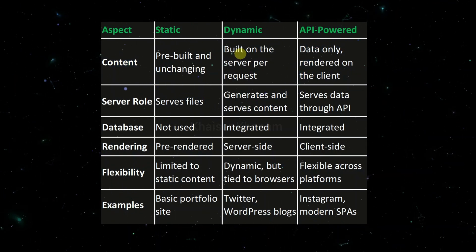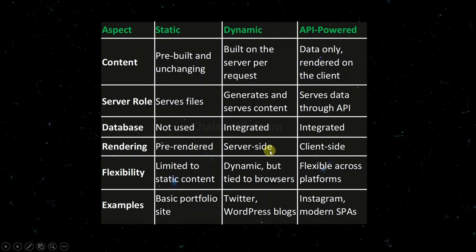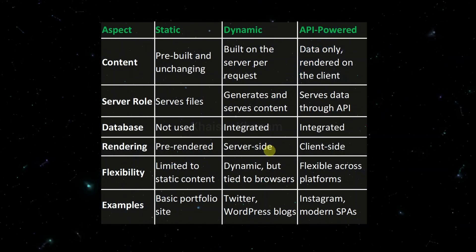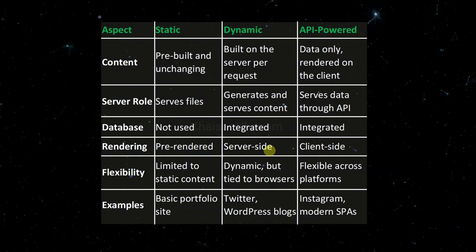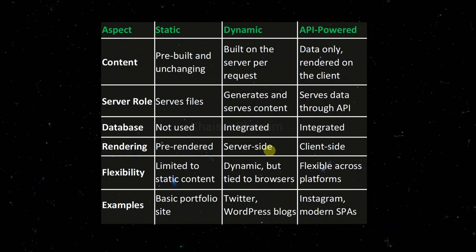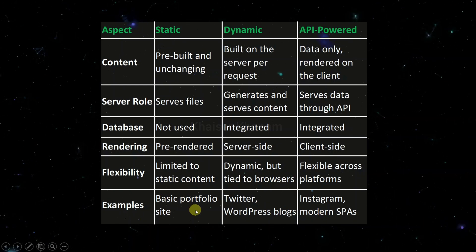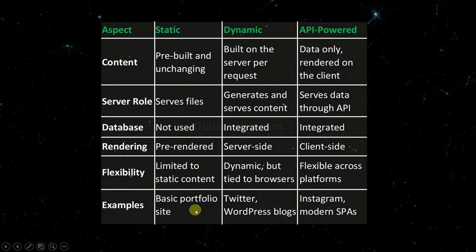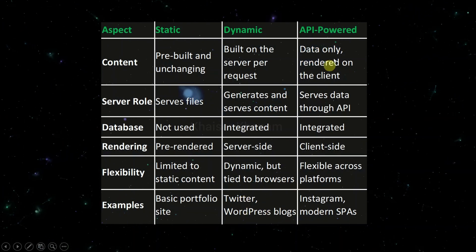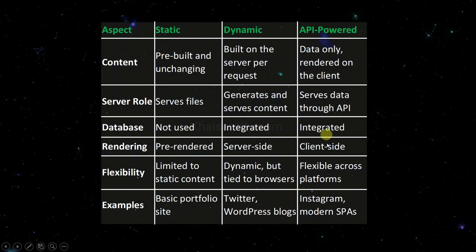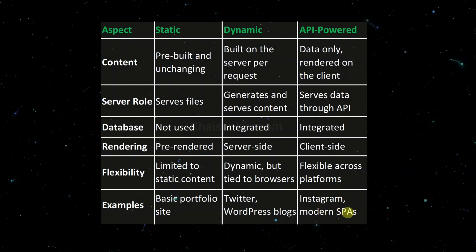For flexibility: static is limited to static content; dynamic websites are dynamic but they are tied to the browser; API-powered websites are flexible across all platforms — we will see in the next slide how it is flexible. Examples of static websites are a basic portfolio site or informational site. Examples of dynamic websites are Twitter, WordPress blogs, etc. Examples of API-powered websites are Instagram, modern single-page applications, etc.